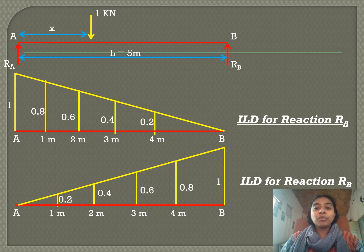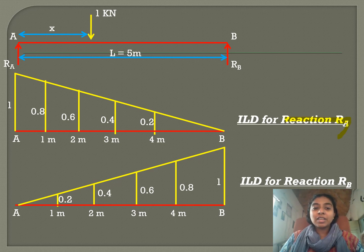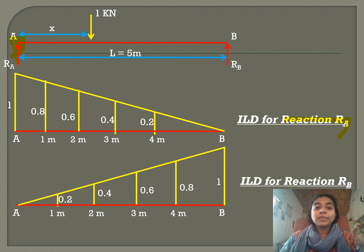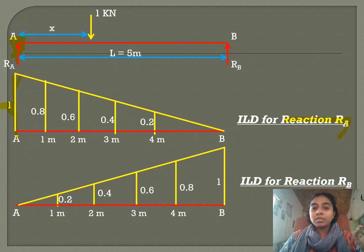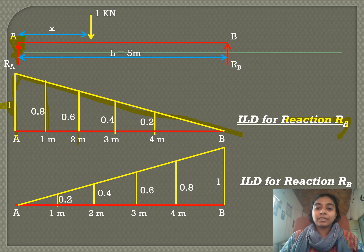For drawing the influence line diagram for reaction RA — A is the left support — at this support you will have the maximum ordinate, which is 1. So here you mark 1. At B, you will have 0, so you extend this to 0. Using similar triangle principles, you can find all the other corresponding values.